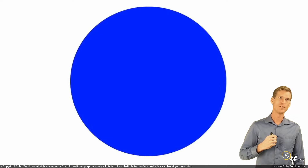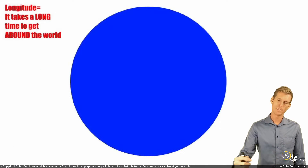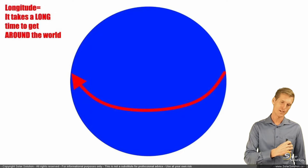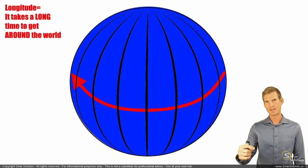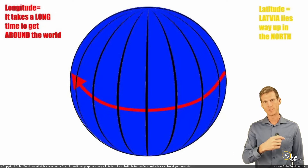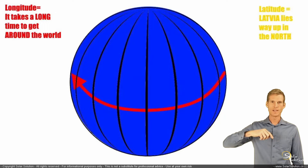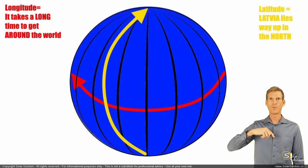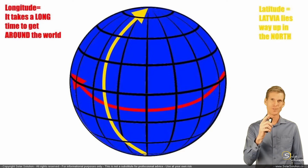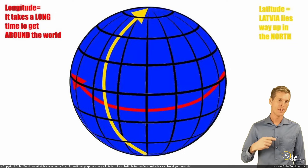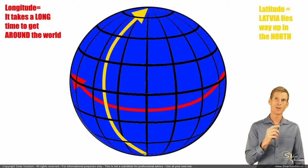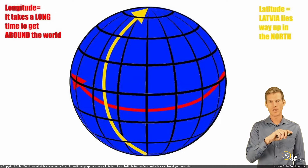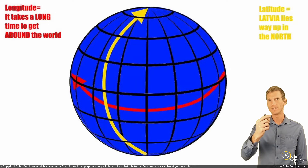So we have our beautiful blue globe, and we know that longitude means the place you are around the world — it takes a very long time to go around the world. And then we have latitude, from Latvia, all the way in the North — that is where you are on the globe by means of north-south orientation. To explain exactly where you are on our beautiful planet, you only need to give the longitude and the latitude, because together they form a grid.